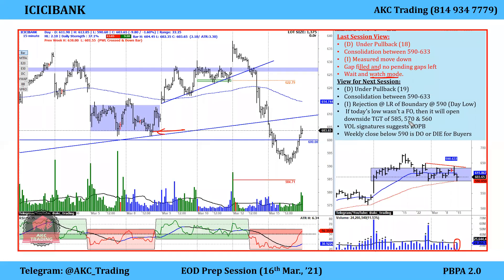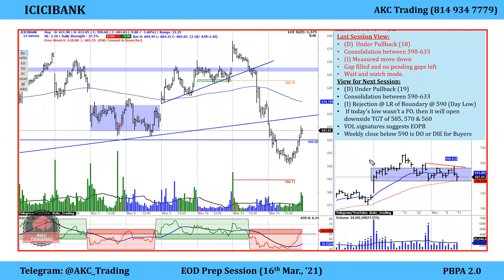For now I'm bullish on this one. The volume signatures I'm getting are end-of-pullback signatures, so there are high chances this pullback will end and it will break the range to the upside. That's why on the daily time frame I have this short-term POS — once it breaks, I'll start looking to enter. In the banking sector, I'm more focused on Axis Bank than ICICI. Axis has more strength. A weekly close below 590 will be do-or-die for buyers for the medium term — we're talking 2-3 months.